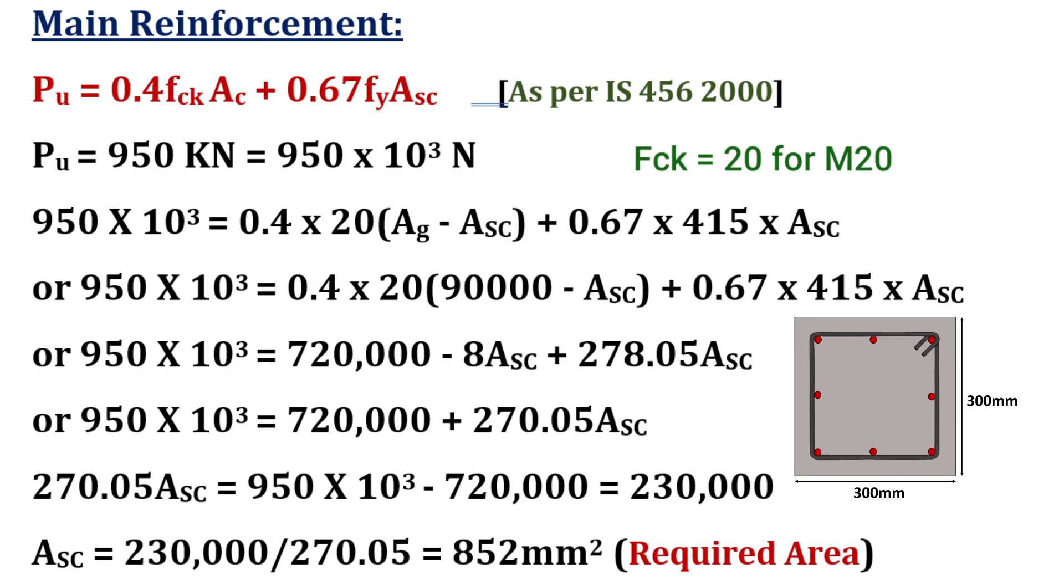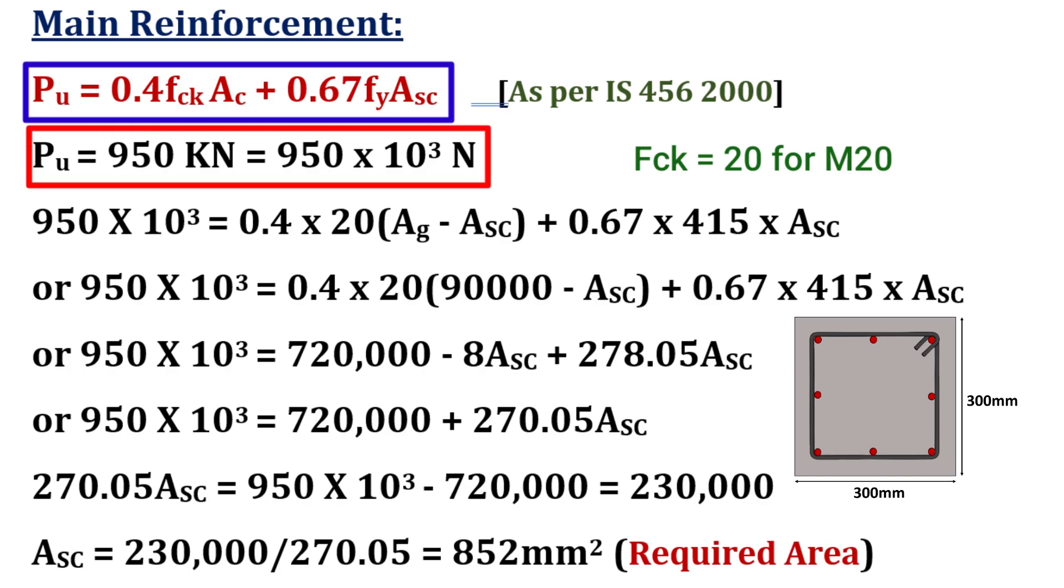To calculate the main reinforcement, we can use the formula, Pu equal to 0.4 Fck Ac plus 0.67 Fy Asc, where Pu is the ultimate axial load of the column, which is given as 950 kN or 950 x 10 raised power 3 N.